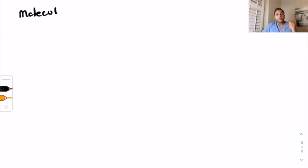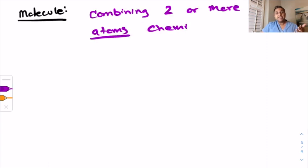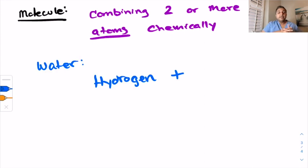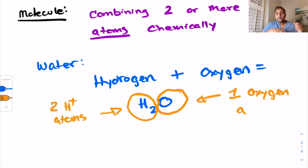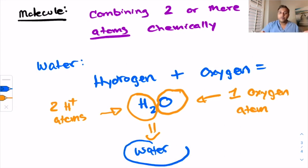Now a molecule is when we combine two or more atoms chemically and make a new molecule. Take water, for example. Water is a compound molecule, meaning we took two different atoms, we brought them together chemically and now they are a new molecule. So water, for instance, we take a hydrogen atom, two of those, and then we take one oxygen atom and then we combine them and then together it creates a molecule called water for us. And that's something that we can use.